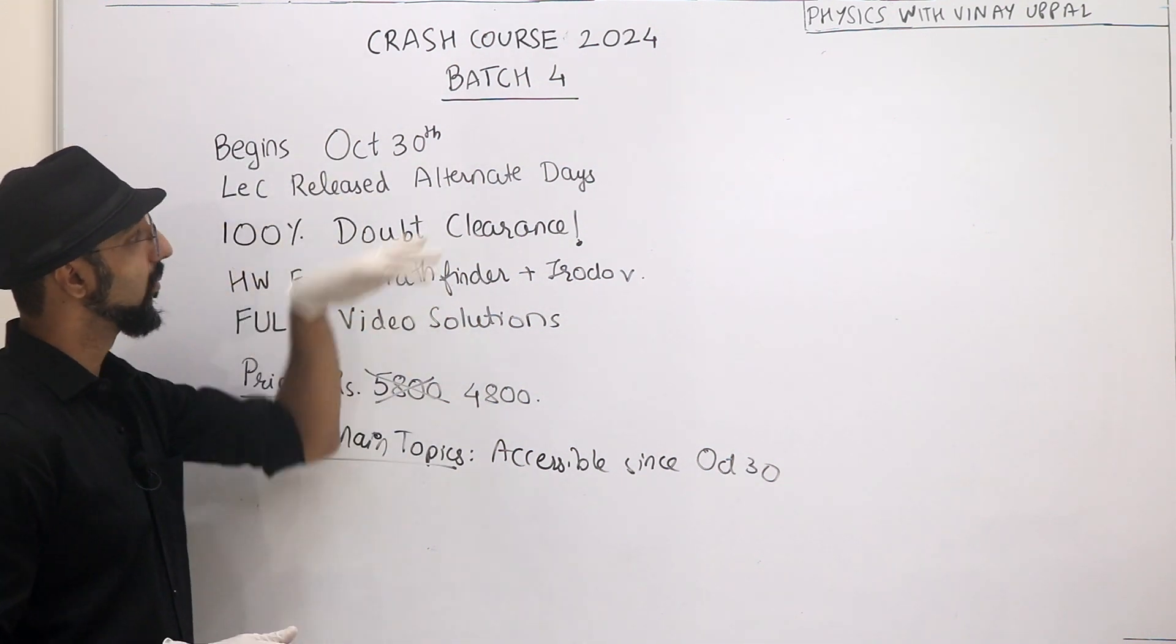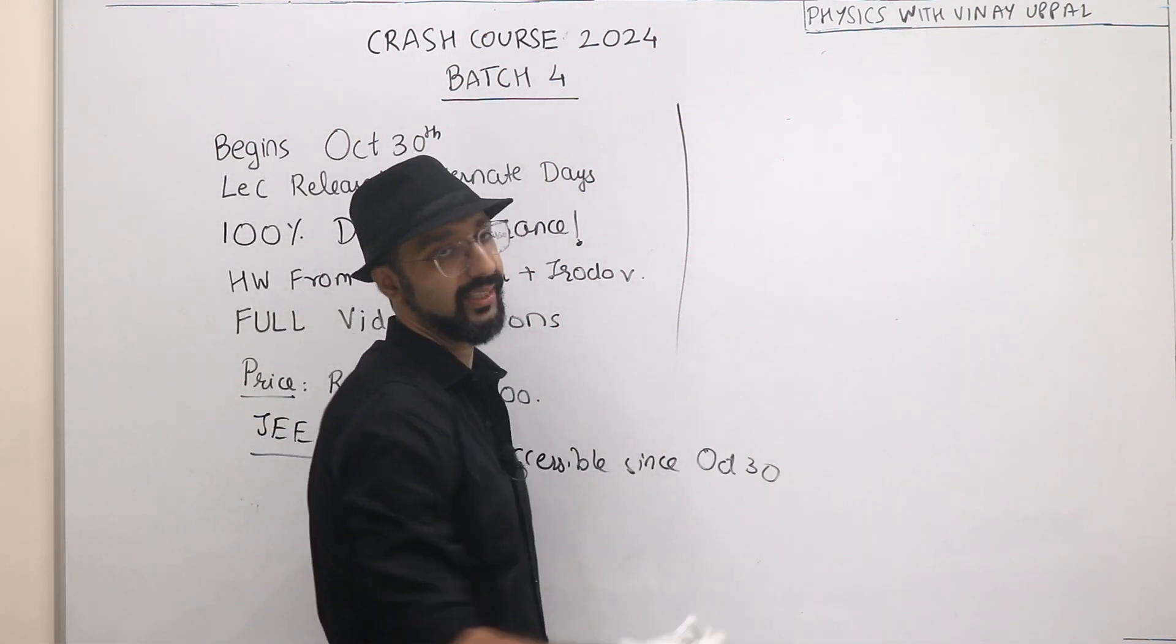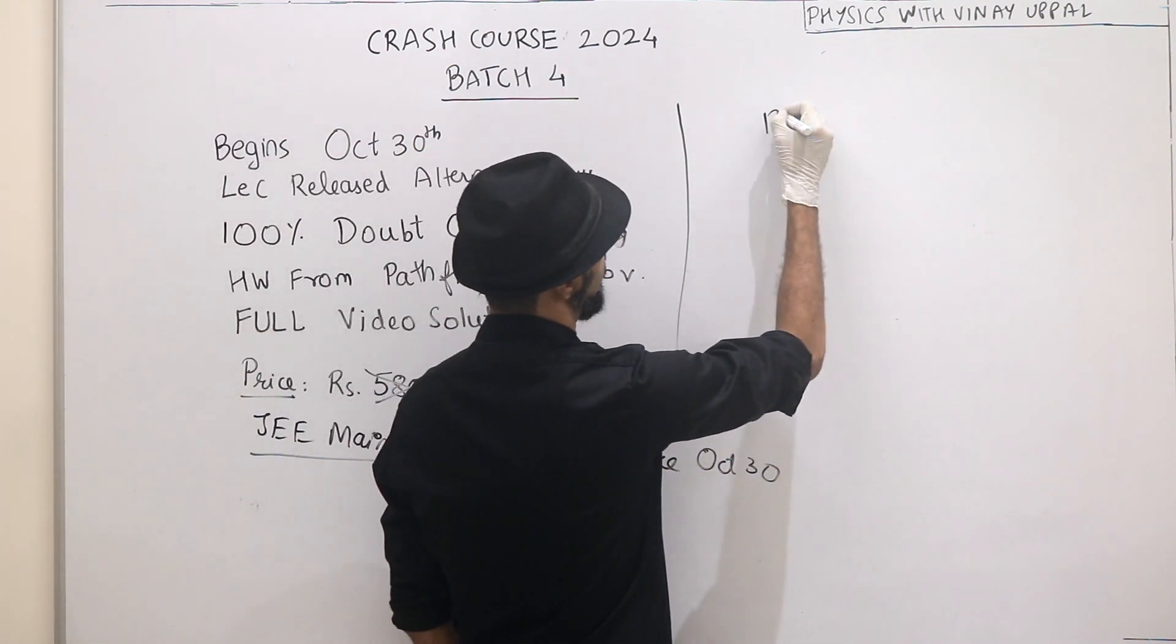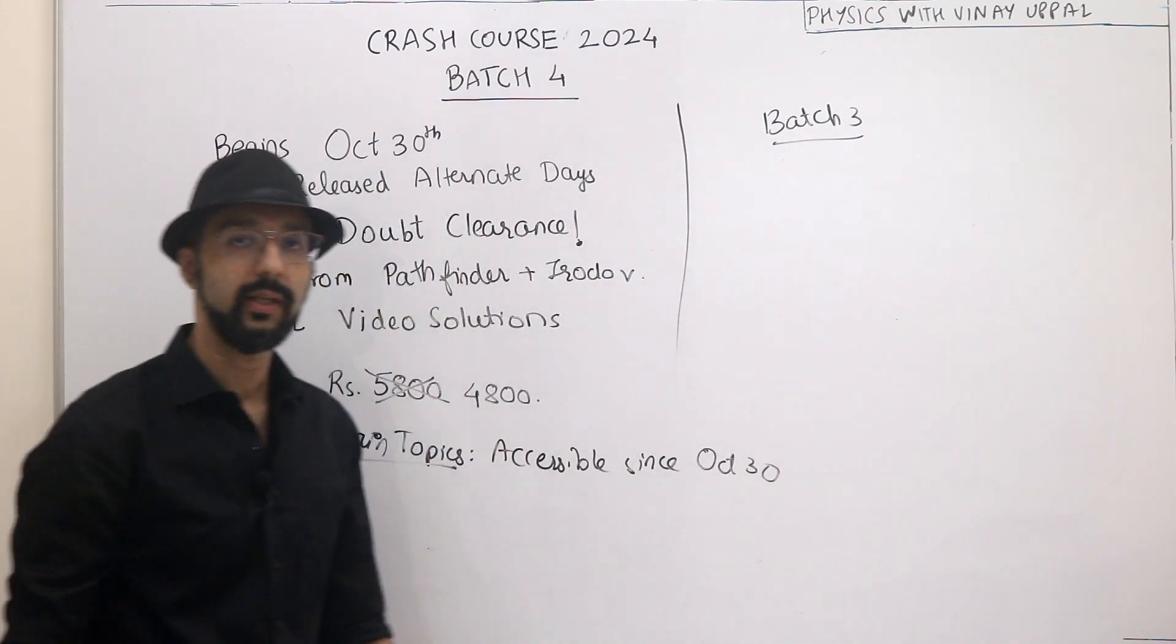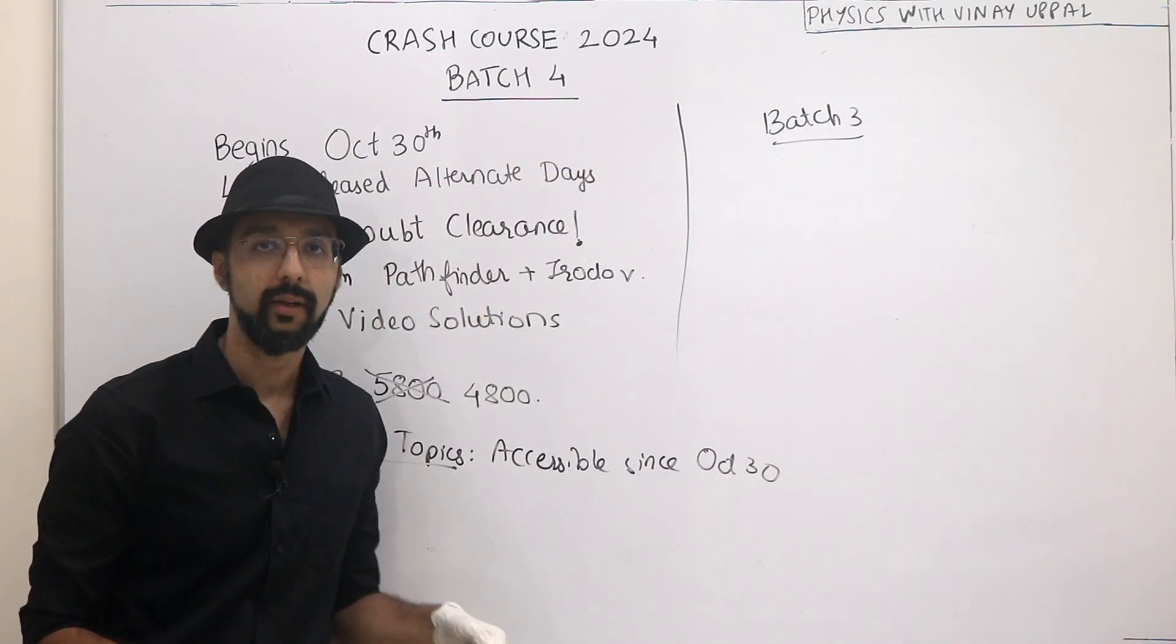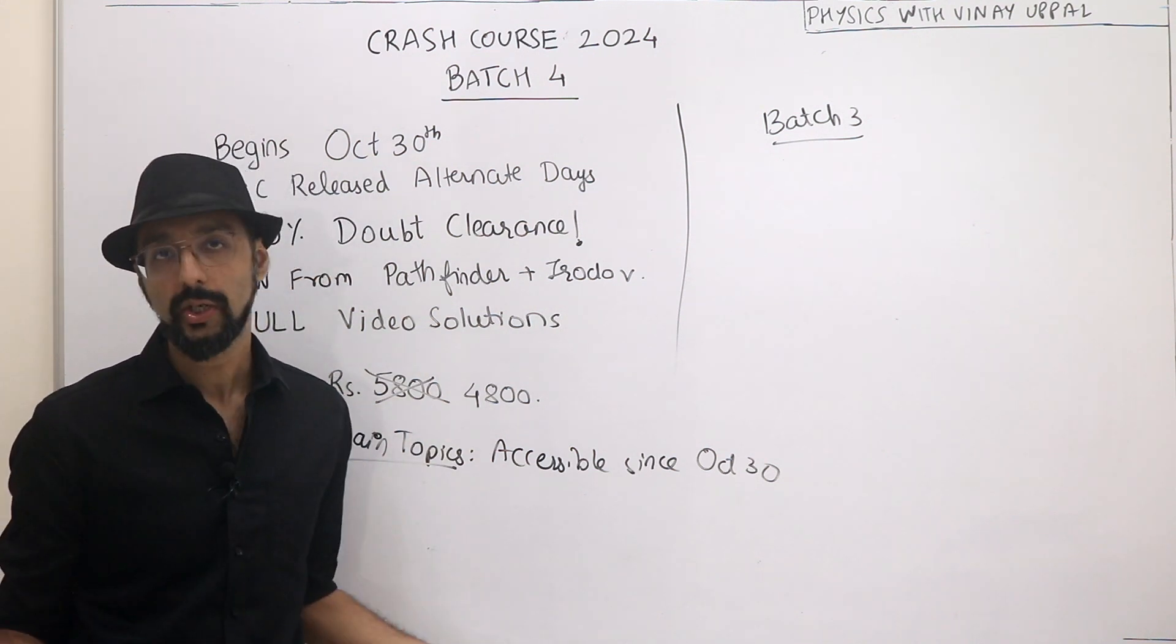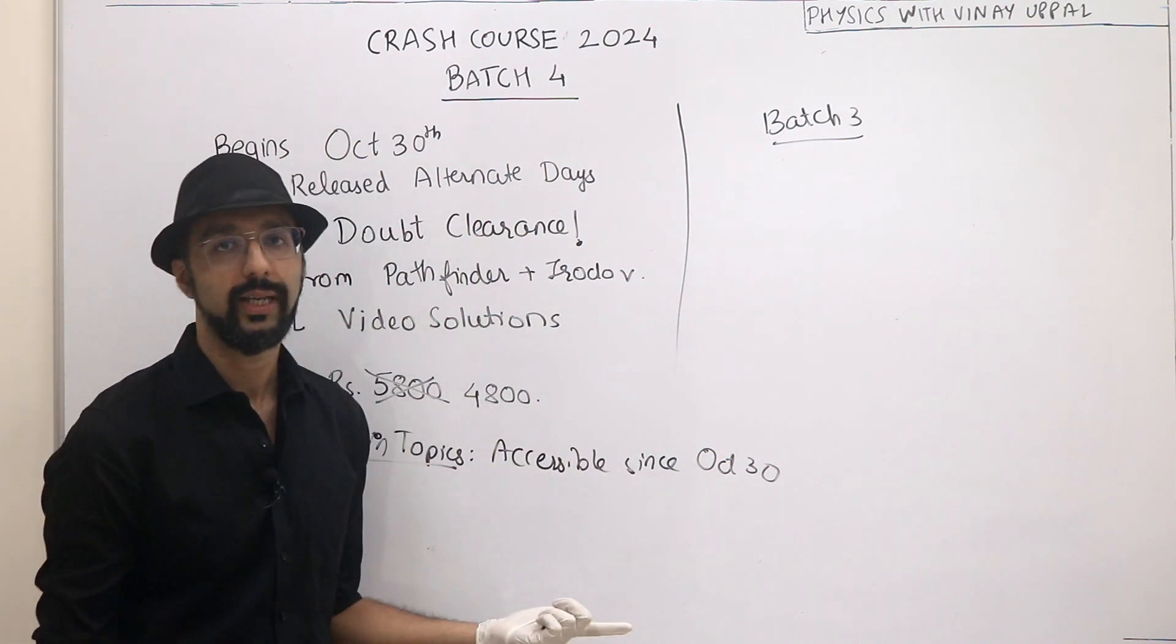In Batch 4 lectures will be released on alternate days. If you want immediate access to all the chapters, then I would suggest you go for Batch 3, which is at a higher price obviously. The whole difference between Batch 4 and Batch 3 is that in Batch 3 you will get access to any chapter you want immediately at once.